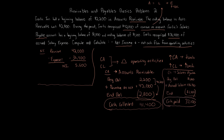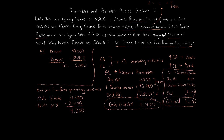We now have our cash collected and cash paid, and we can determine the net cash flow from operating activities. Both accounts receivable and salaries payable are current assets and current liabilities, so they fall under operating activities. We take cash collected of $41,400 and subtract cash paid of $37,100, giving us a net cash flow from operating activities of $4,300.